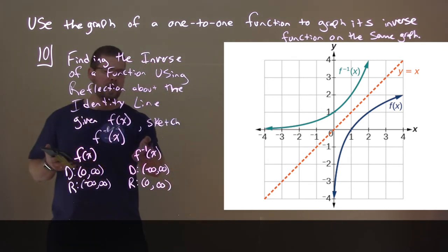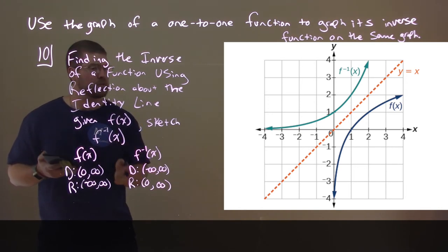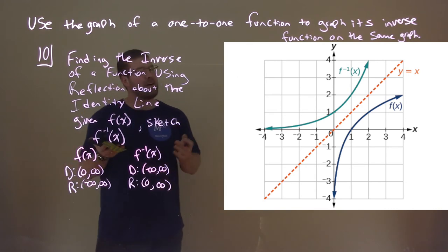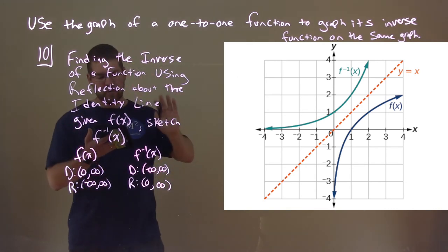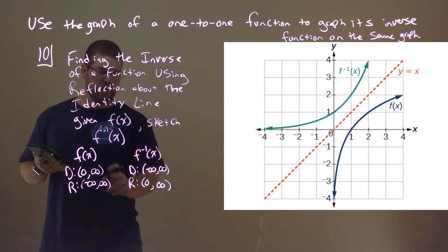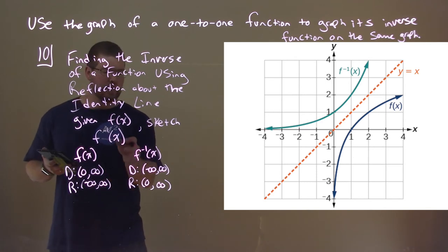So what do you notice about the domain and range of the inverse function and its original function? They're swapped. This one we didn't have to restrict anything. The graph itself was fine for an inverse function, passed the horizontal line test, but notice the domain and ranges are flipped from each function.